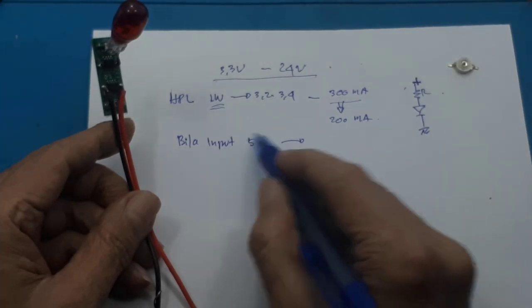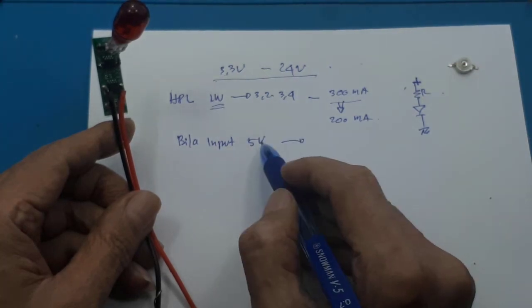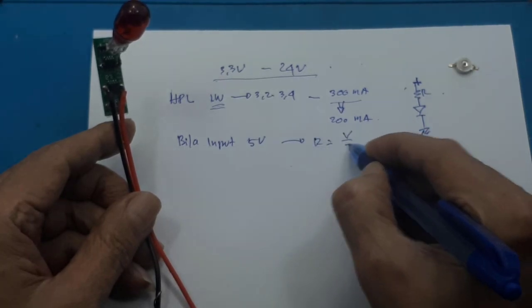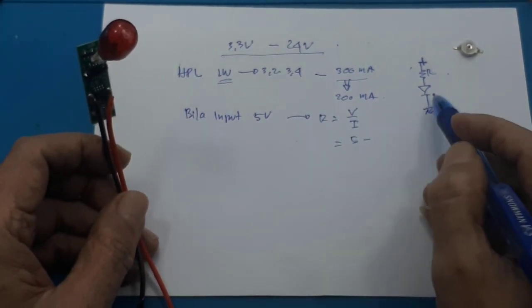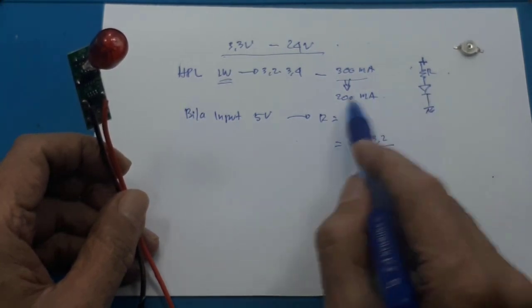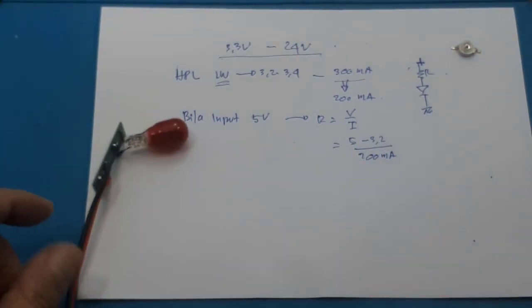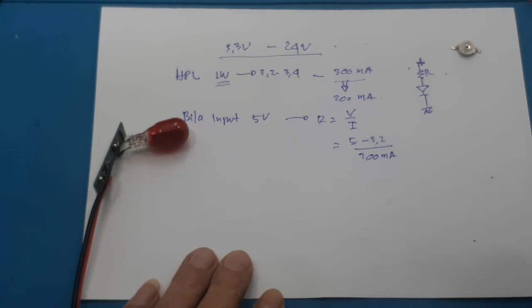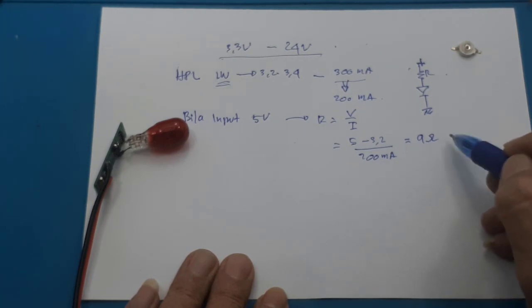Jadi kita menghitung R tergantung dari input yang kita gunakan dan beban yang kita gunakan. Contoh di sini bila input 5 volt, maka R sama dengan tegangan dibagi arus. Tegangannya input 5 volt, beban kita hitung saja di 3.2, dibagi 200 mA. Paham ya bro? Saya coba hitung dahulu.